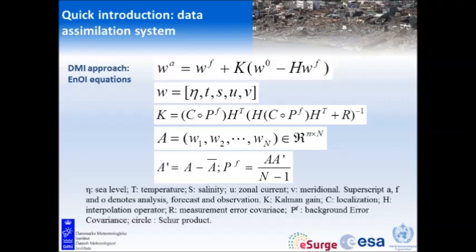The P matrix here is basically the cross-correlation between one value at one point and the same type of values from surrounding points. For example, if we have sea level in one point, you can do correlation with sea level in neighboring points, or also with temperature in neighboring points. This forms a big matrix that you can use to relate your measurement in one point to the measurements in surrounding points, correcting your model in all these surrounding points.